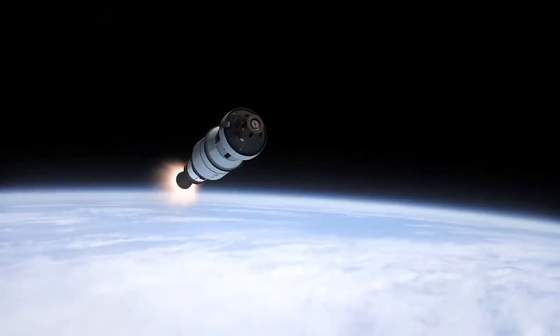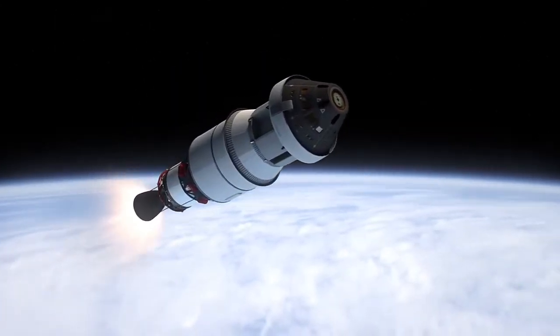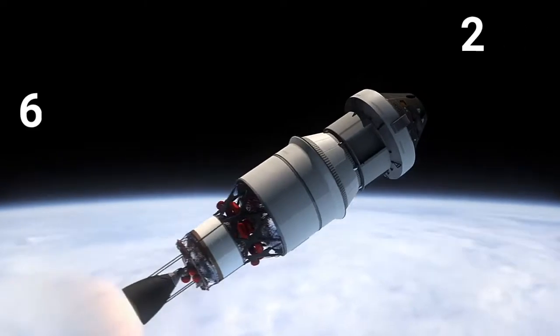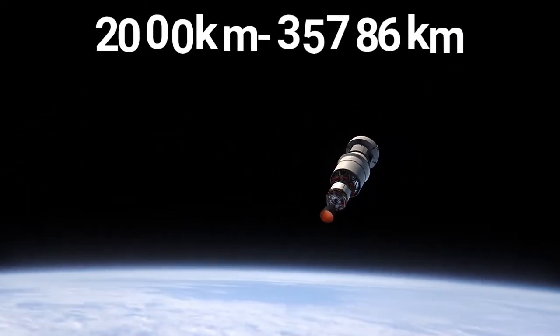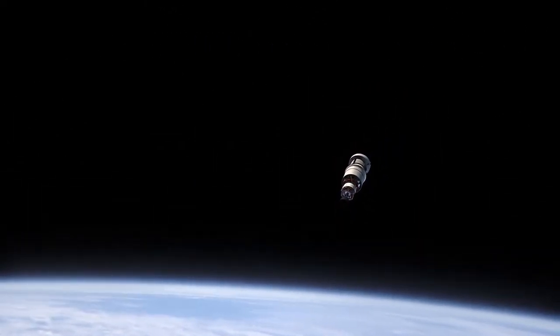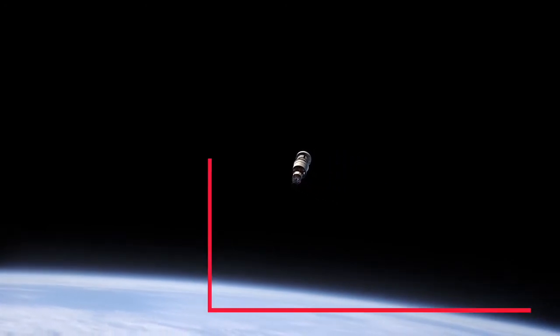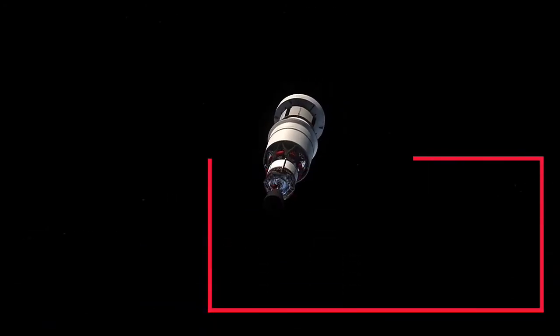A medium Earth orbit is an Earth-centered orbit with an altitude between 2,000 km and 35,786 km above sea level. The orbital periods of medium Earth orbit satellites range from 2 to 6 hours.